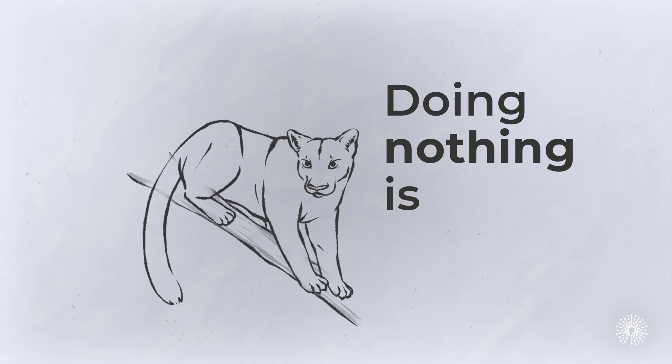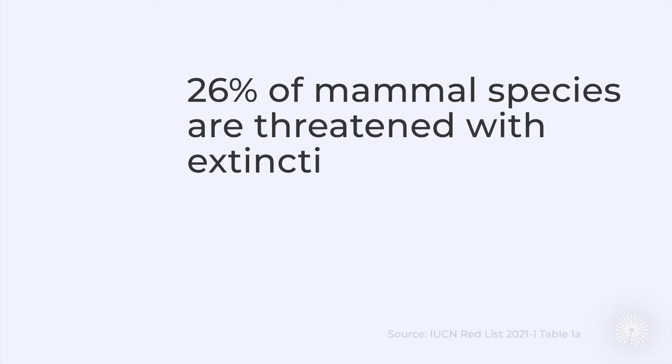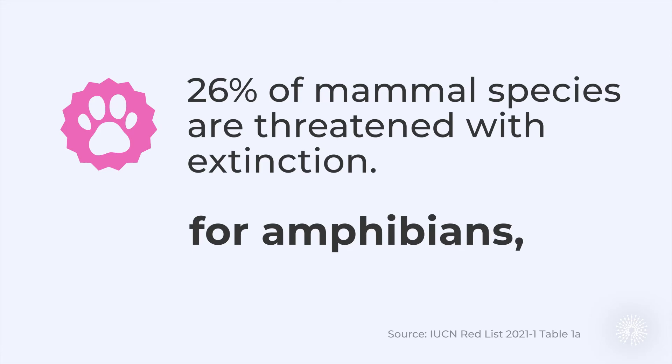But doing nothing is also risky. The Florida panthers were almost certainly headed for extinction in the 1990s. Today, it's estimated that 26% of mammal species are threatened with extinction. For amphibians, that number is a staggering 41% with many of them facing similar problems as small population sizes, habitat fragmentation, and inbreeding.